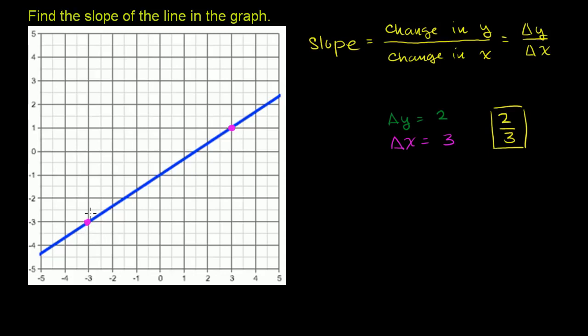So let's think about the change in y first. So the change in y, I am going down by how many units? 1, 2, 3, 4 units. So my change in y in this example is negative 4. I went from 1 to negative 3. That's negative 4. That's my change in y. Change in y is equal to negative 4.